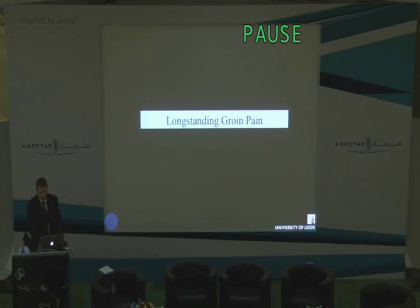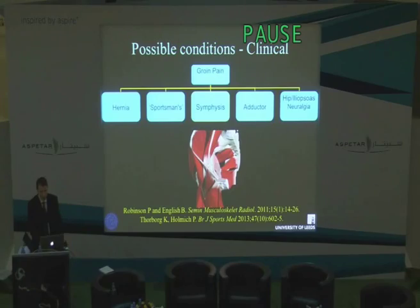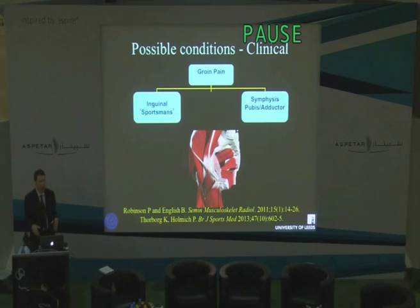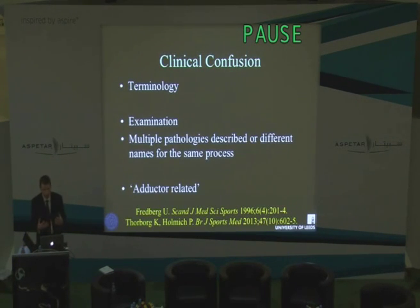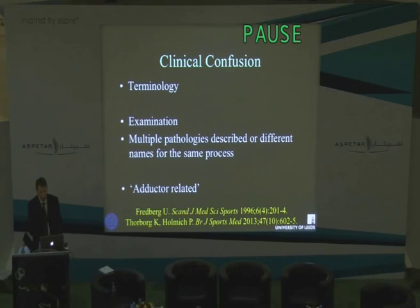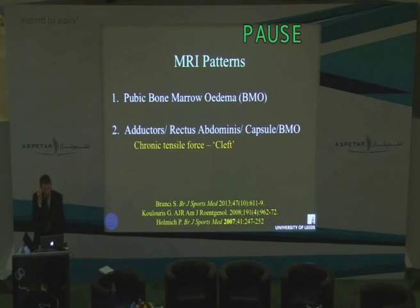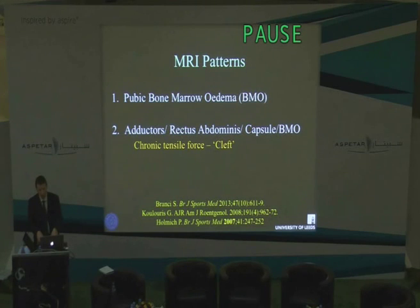Let's leave the hip now and move on to the groin. We've already heard the number of conditions that can occur, and certainly in my clinical practice the two clinical diagnoses I get sent are people who think it's symphysis and adductors, as we've talked about this morning, and this other group that think it's inguinal-based pain - preclinical hernias, whatever you want to call it. The terminology is confusing. As Sonia showed this morning, the majority of studies certainly in soccer players show that the clinical findings are usually adductor-related.